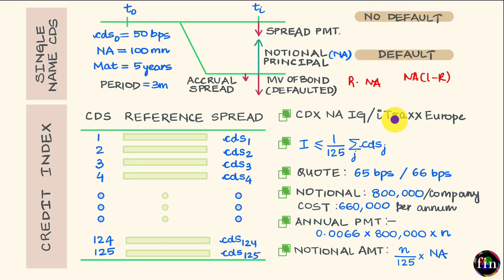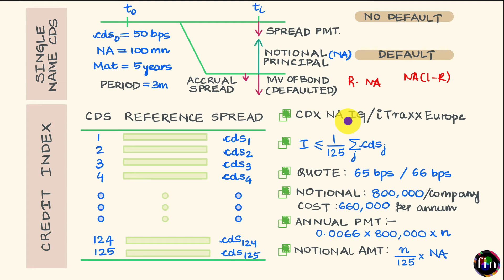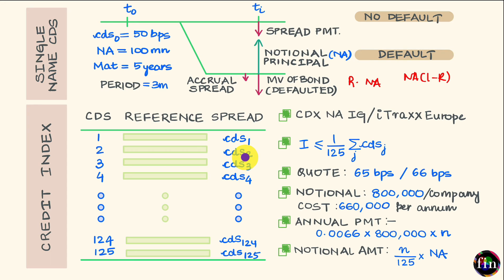Since a credit index is associated with a CDS, it also has a maturity. So we can talk about the CDX NA IG 1-year index, the CDX NA IG 5-year index, or the CDX NA IG 10-year index. Taking the CDX NA IG 5-year index as our example, I have tabulated all 125 names in this index, and alongside each name I have tabulated the individual CDS spreads for each name in the reference portfolio. Since we are referring to the 5-year index, each of these individual CDS spreads will also be 5-year spreads.